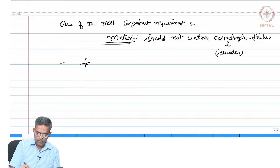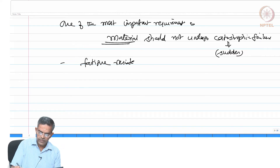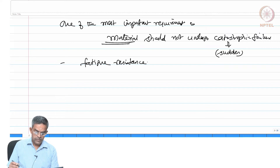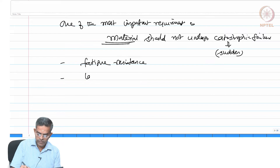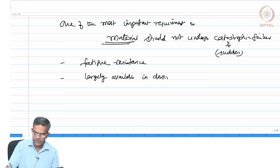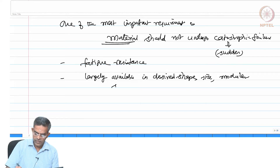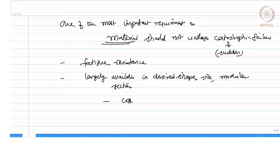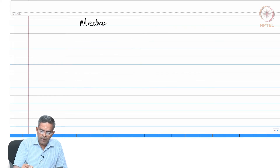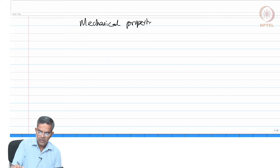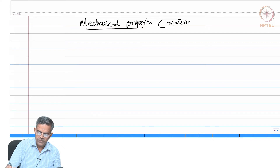Other requirements include that the material should possess good fatigue resistance, and it should be largely available in desired shape, size, and modular sections, apart from being cost effective. These are the kinds of objectives we look for when choosing materials for construction.